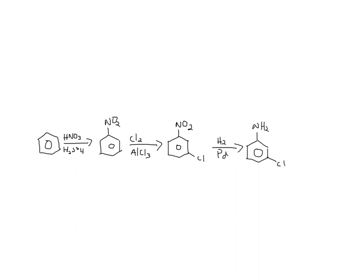For this reaction, you start with a benzene ring and you have to add the nitro group first in order to get the chlorine group to be meta instead of ortho or para. After you add your nitro group, you add your chlorine group, and then you can use H₂/Pd/C to reduce your nitro group and get your desired product.